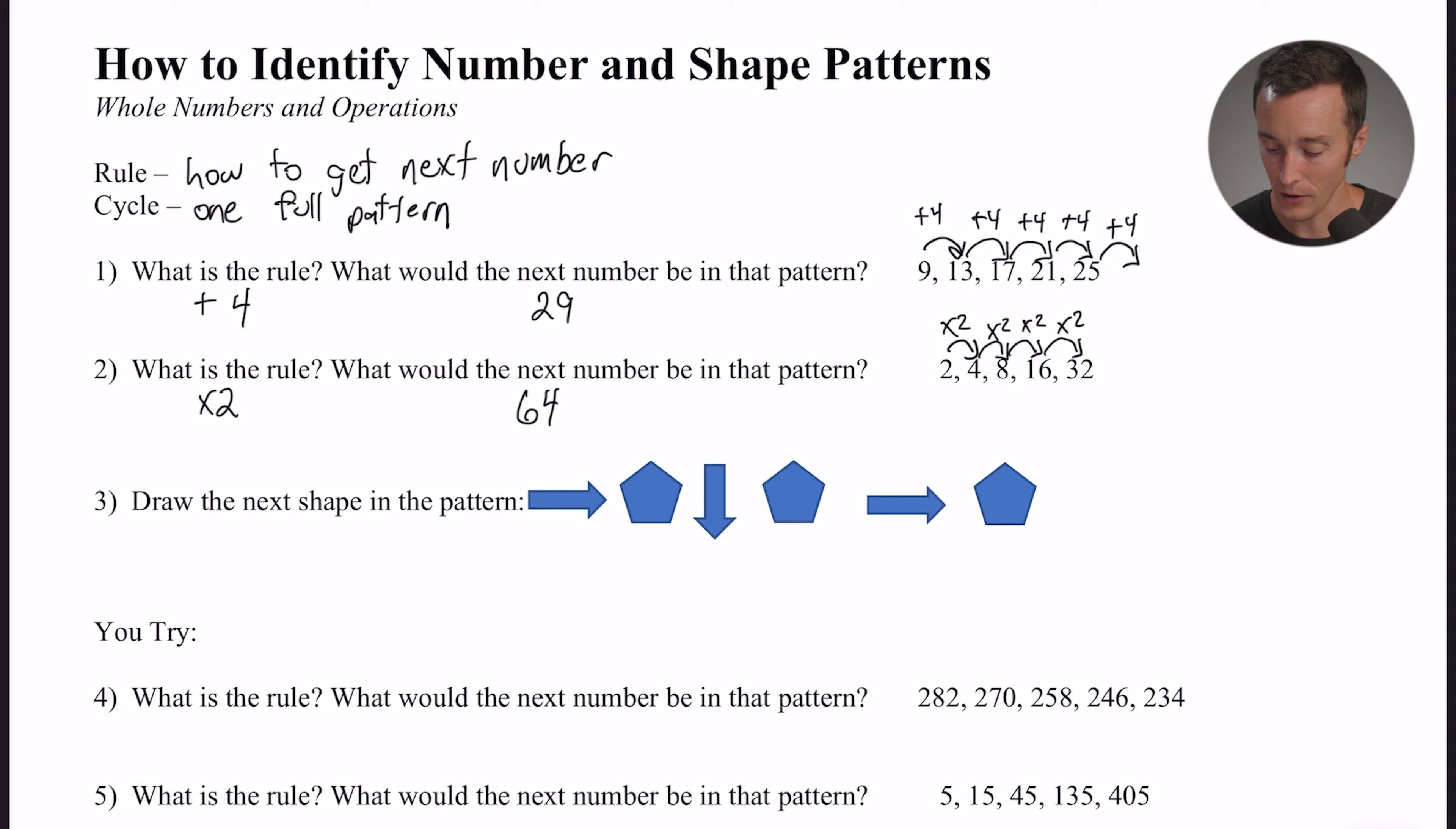So it goes: right arrow, pentagon, down arrow, pentagon, right arrow, pentagon. And your brain is probably already trying to tell you what it is. Let me just point this out real quickly first. The cycle is one full pattern. Can you identify where there's a break in the cycle? Well, the cycle would start here and end here, right?